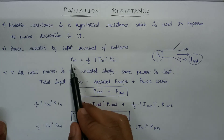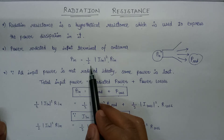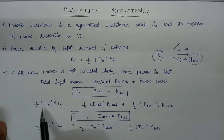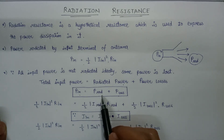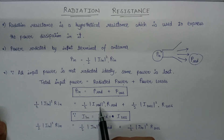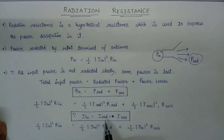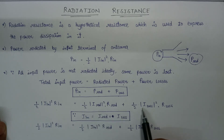Since the expression for input power is half times I squared times R, we substitute: P_input equals half times |I_input|² times R_input. Similarly, P_radiated equals half times I_radiated² times R_radiated, and P_losses equals half times I_losses² times R_losses. Since the input current equals the radiated current and the losses current, we replace I_radiated and I_losses with I_input.